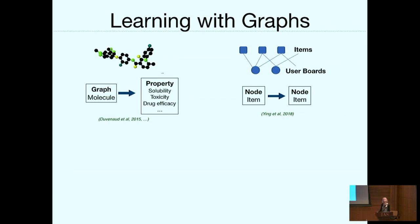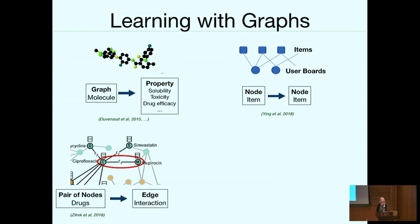Another example is recommendation, where we actually want to do a prediction from node to node. As a simple example from Pinterest, we may have users and boards where users collect items. We have two types of nodes — items and users — and we connect those two if a user selects an item. Knowing that the user selected an item, we want to propose other items to this user. We can also have problems where we want to predict from pairs of nodes to whether there's an edge, or what kind of edge this may be.